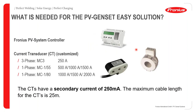For the PV Genset EZ solution, the key components are the PV system controller and the current transducers. These are available in three variations: a three-phase CT measuring up to 250 amps; single-phase CTs — the MC1/55 — measuring from 500 to 1,500 amps; and single-phase CTs — the MC1/80 — measuring from 1,000 to 2,000 amps. The CTs have a secondary current of about 250 milliamps, and the maximum cable length to the PV system controller is 25 meters.